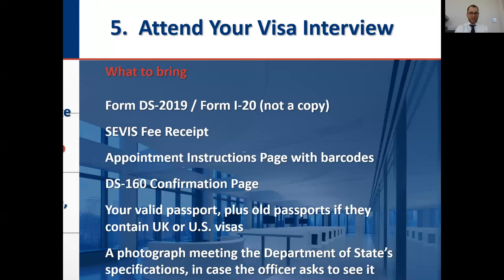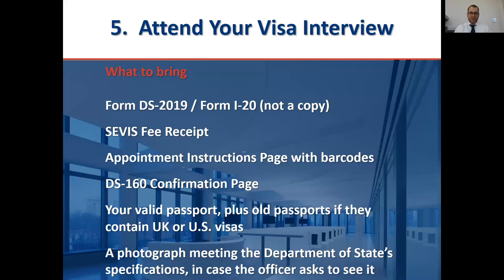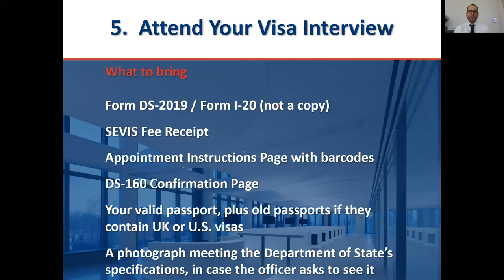Step five: the interview itself. That graphic shows the waiting room in the embassy — it's a brand new embassy, a really nice space. At a minimum, you bring: your I-20 or DS-2019 (original, not a photocopy), your SEVIS fee receipt, the DS-160 confirmation page, your passport, and any old passports containing previous UK or US visas. You'll also need a photograph — check travel.state.gov for the current photo requirements. Note that you can no longer wear glasses in a passport photo.